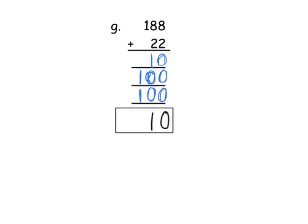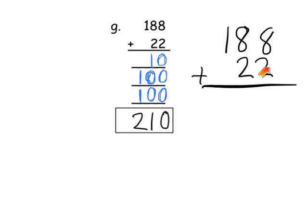So we end up with nothing in the ones column — zero plus zero plus zero gives us nothing. And then one ten plus no tens plus no tens gives us one ten. And then a hundred plus another hundred gives us two hundreds. So our answer is two hundred and ten.